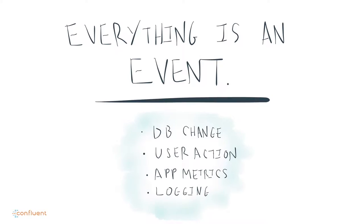We started to really think about this. The first idea we came up with was that you could treat all these different data types as some type of event. A log file is pretty obvious — it's a list of events that happened. Logging user activity is the same way. But you can treat databases the same way. Change data capture is basically a series of updates: the value of this row is now this, the value of this row is now this. Application metrics, logging — basically everything we had was some sort of event, like a new record was created.